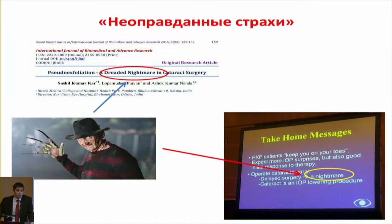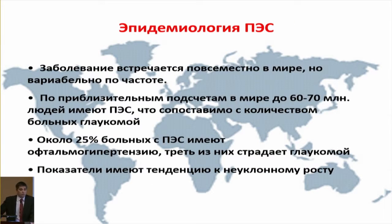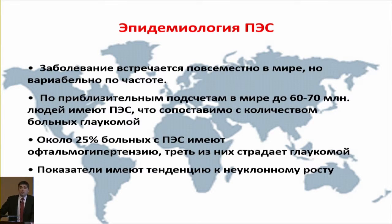Speaking about the epidemiology of this syndrome: it is very prevalent worldwide but variable in its rate. According to moderate calculations, about 70 million patients, but in the case of glaucoma, half of them are possibly under-diagnosed. About one-fourth of patients with the syndrome have ophthalmic hypertension, and one-third demonstrate full-fledged glaucoma.